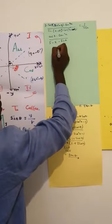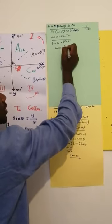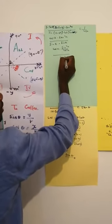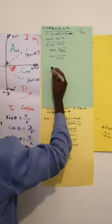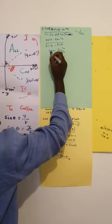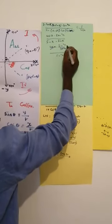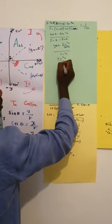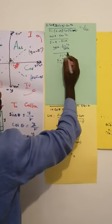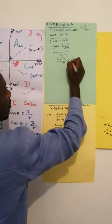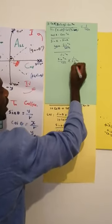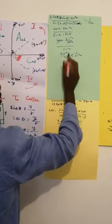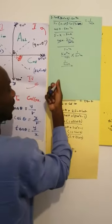Cos x times tan²x is like sin²x over cos²x. Divide by sin²x. One cos and one cos divide each other, and we are left with sin²x over cos x. Then we multiply by 1 over sin²x. Sin²x and sin²x cancel. The answer is 1 over cos x. So this side is equal to this side — this is proven.